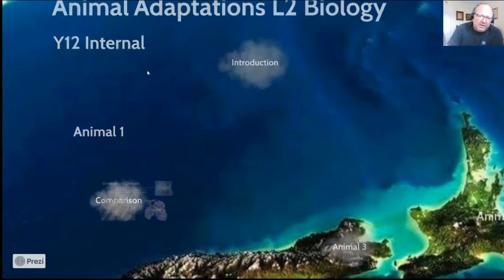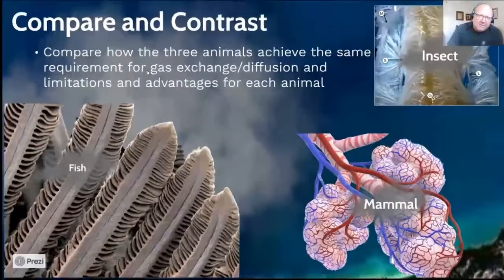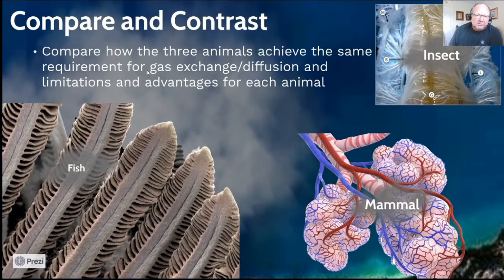Then we get to the comparison — compare and contrast. Looking at this screen you can see a fish filament, and you can clearly see the lamella on it. The structures around the sides of the lamella give a great surface area.